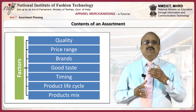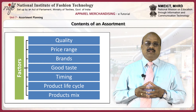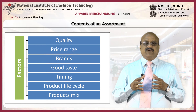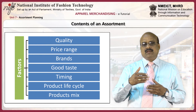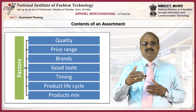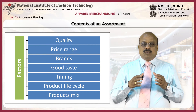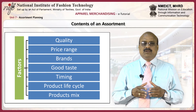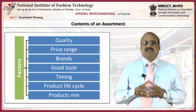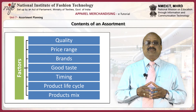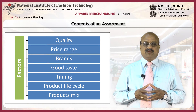What should a well-planned assortment contain? Factors such as quality, price range, brands, good taste, timing, product life cycle, and product mix all affect assortment planning.